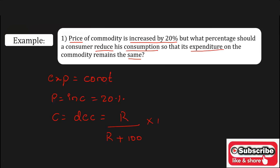In the denominator it is plus - why? Because price is increased, so here is a plus sign. Now r is nothing but the given increased value, that is 20 percent. Now substitute the value of r in the formula.